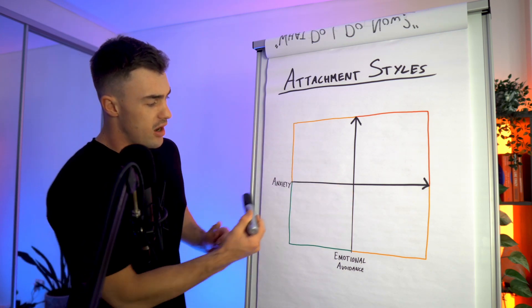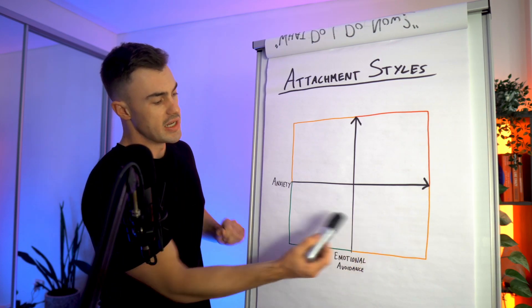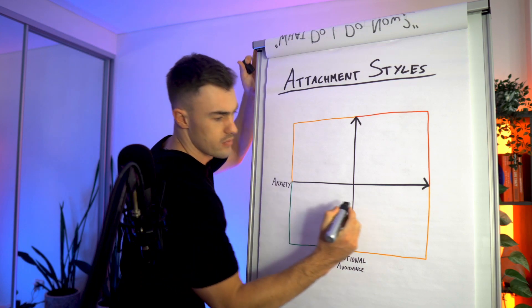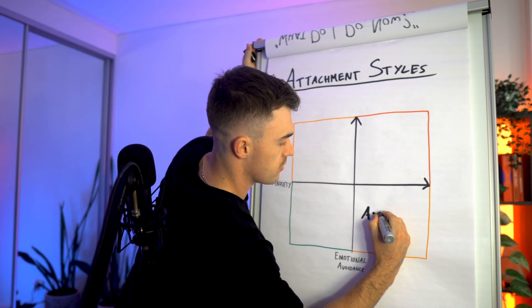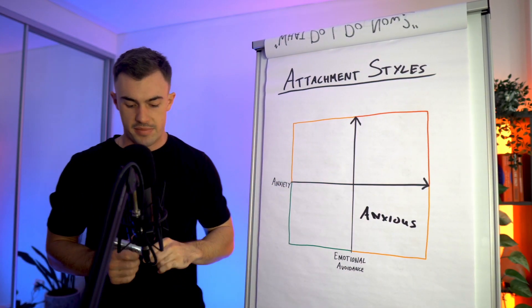The first is the high anxiety types with low emotional avoidance. So these are the anxious types.